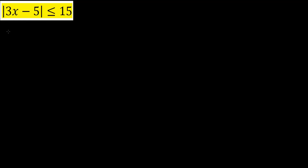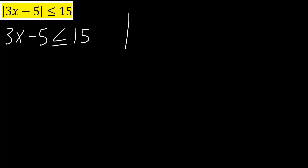The first thing we're going to do is split this into two equations. We will have 3x minus 5 is less than or equal to 15, and we will have another one: 3x minus 5 is greater than or equal to negative 15. The opposite.